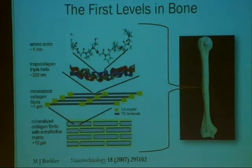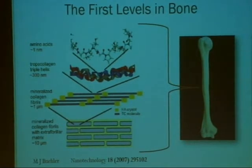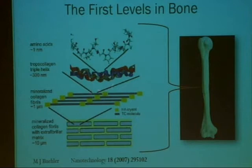As seen here, the lowest level examined in this research was of the amino acids, which then assemble into three polypeptides that form the triple collagen protein — basically a triple helix. When these collagen proteins assemble in staggered arrays, they form the collagen fibrils. In the gaps between the collagen fibrils, there is a mineral phase of hydroxyapatite.